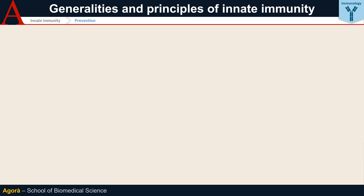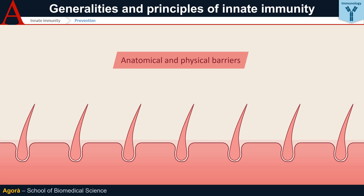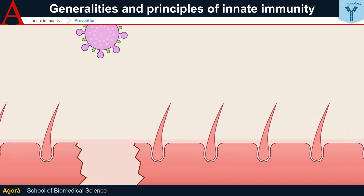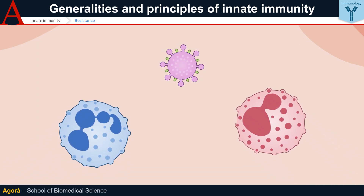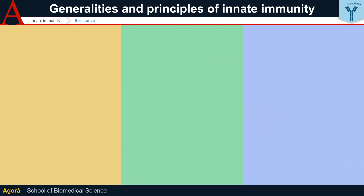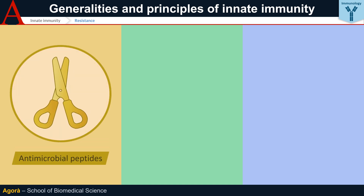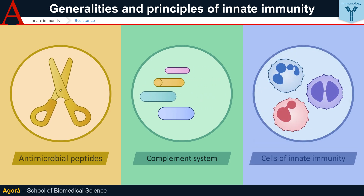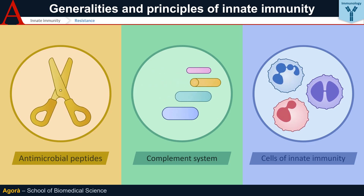The first real mechanism of innate immunity involves anatomical and physical barriers such as the skin or mucous membranes, which prevent the entry of pathogens — this is the body's prevention strategy. Once that prevention mechanism has been bypassed, the body puts in place a strategy of resistance, trying to kill the pathogens. This first involves preformed systems such as antimicrobial peptides normally present in human tissues, or the complement system — a set of 30 soluble proteins in the blood that help the body recognise and kill bacteria. In parallel, cells of innate immunity are activated to help eliminate the pathogen.